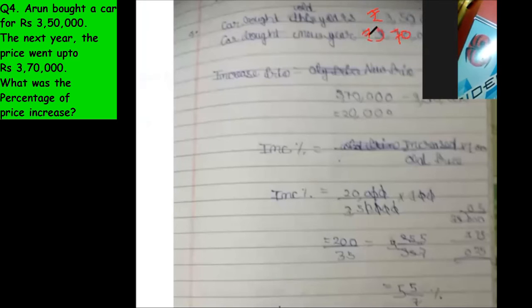First of all, write rupees. Now increase price 370, that means new price minus old price. Very good.